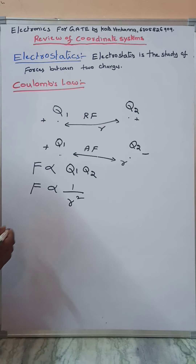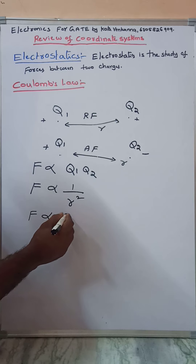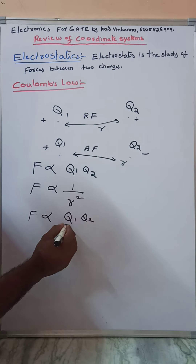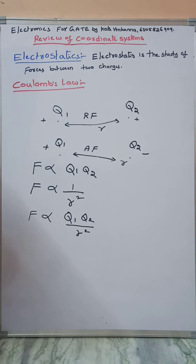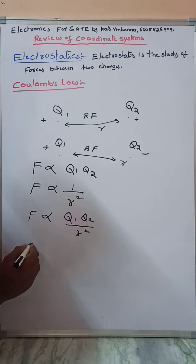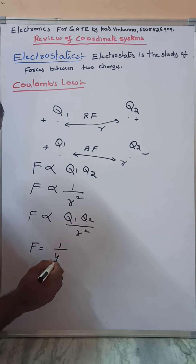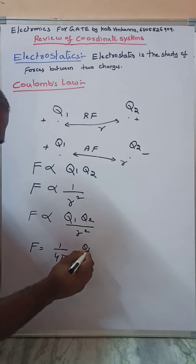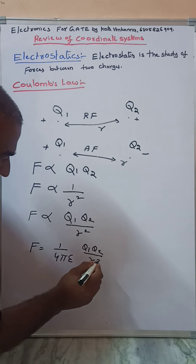Combining both relationships, F is directly proportional to Q1 Q2 divided by R squared. This is written as F equals 1 over 4 pi epsilon times Q1 Q2 over R squared.